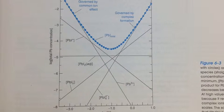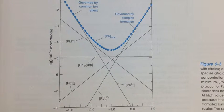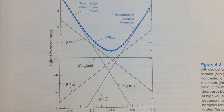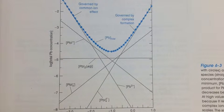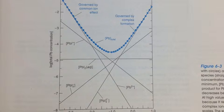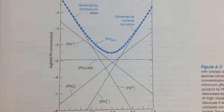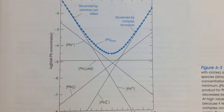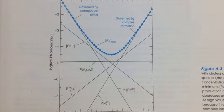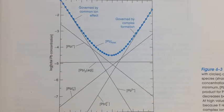The blue line shows as the I- is added to the solution, the solubility of lead goes down and is governed by the common ion effect. Once it reaches a low point, the concentration of lead starts to increase and is governed mainly by the complex formation of ions.